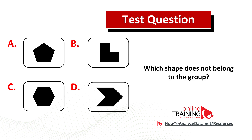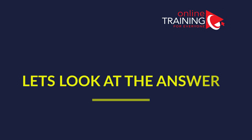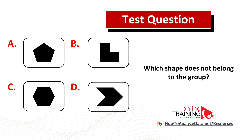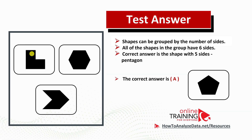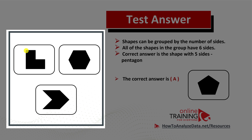Did you come up with the answer? Let's continue and see how we can solve this challenge and get to the solution together. In this case, shapes can be grouped by the number of sides. For example, you can see that all the shapes on the left have six sides.